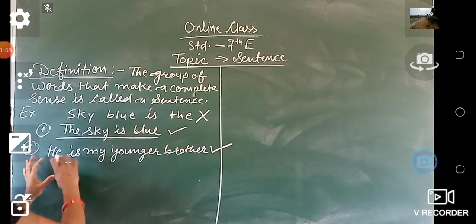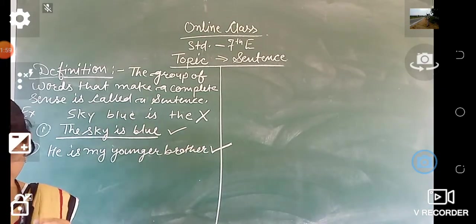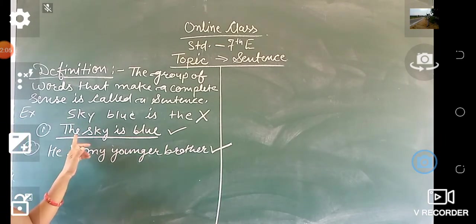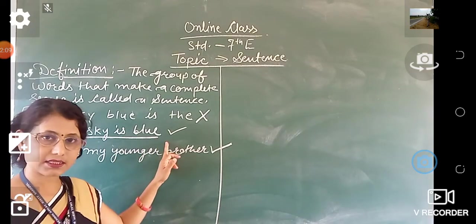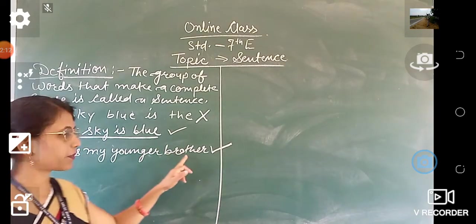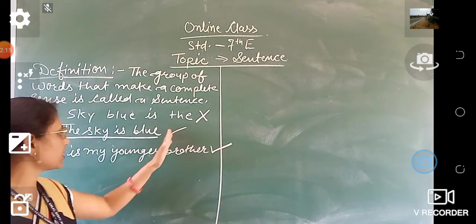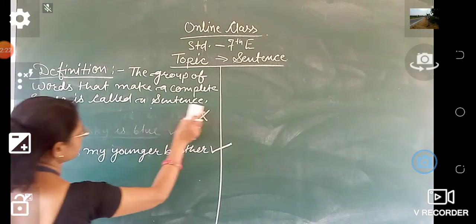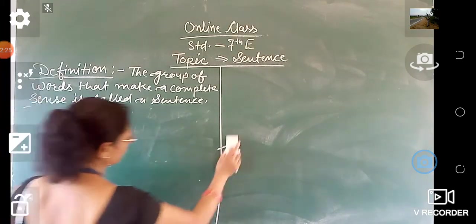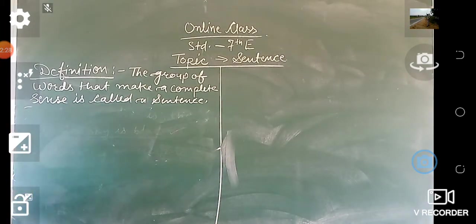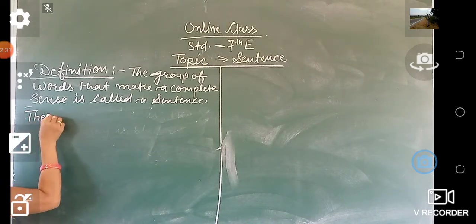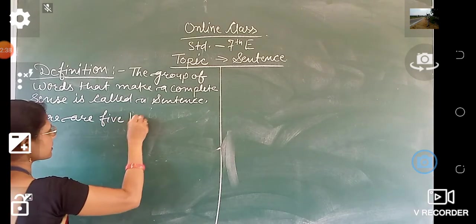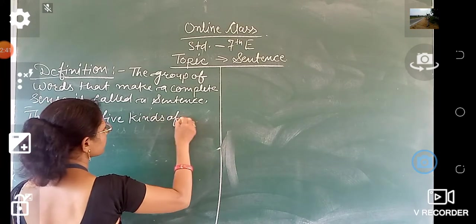Now, how many kinds of sentences are there? There are five kinds of sentences.